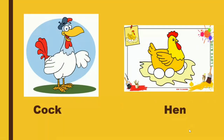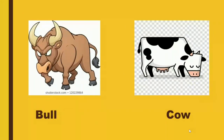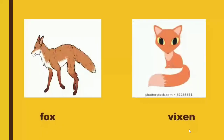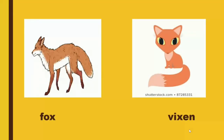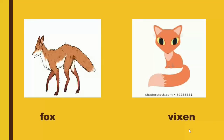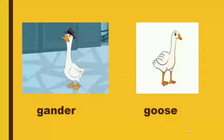Let us see some more examples. Masculine: cock — Feminine: hen. Masculine: bull — Feminine: cow. Masculine: fox — Feminine: vixen. Masculine: gander — Feminine: goose.